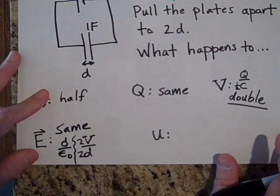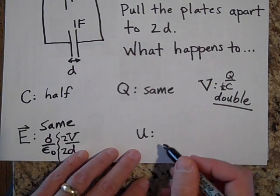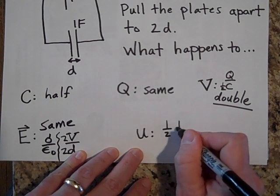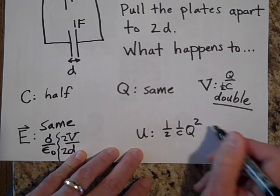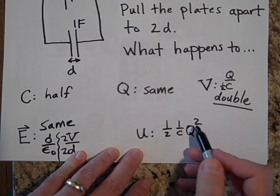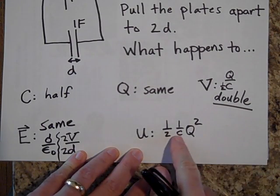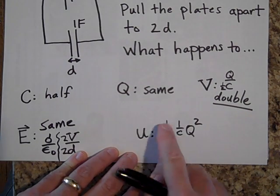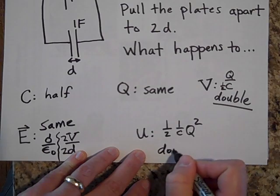As far as energy goes, the Q is the same. So I'm going to use the equation that says this is one half, 1 over C Q squared. So they both have the same Q. And so if I half the C, that's going to double the energy. So the energy is doubled.